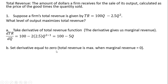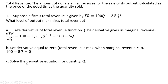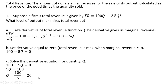Next step is to set the derivative equal to 0. Total revenue is maximized when marginal revenue equals 0. So setting 100 minus 5Q equal to 0, and in the third step we solve for Q. Dividing through by 5, total revenue is maximized at an output of 20 units.